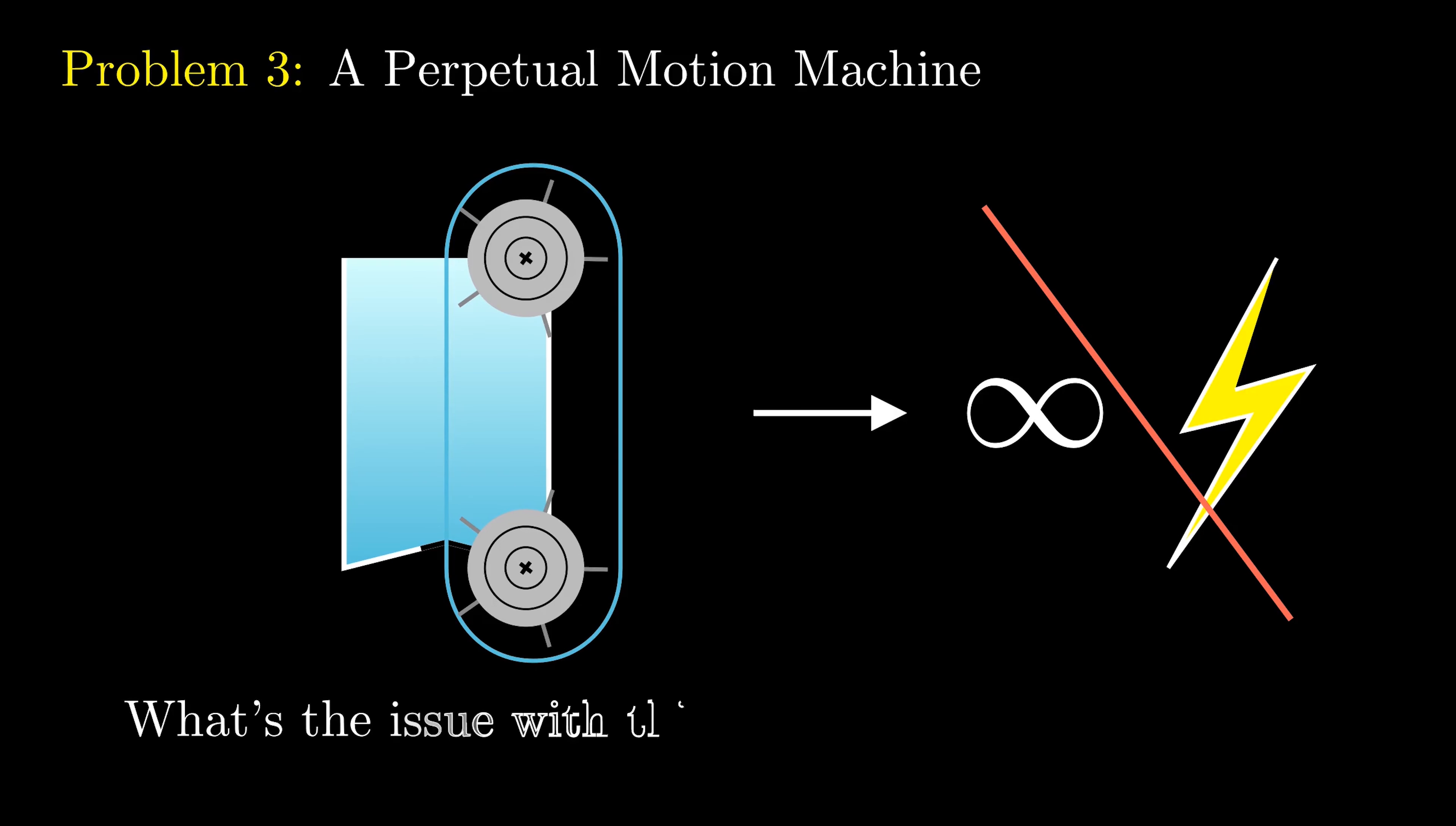So what's the issue with this perpetual motion machine? Comment your answer down below. And for this, don't cite friction or viscosity. This is a more important energy loss.